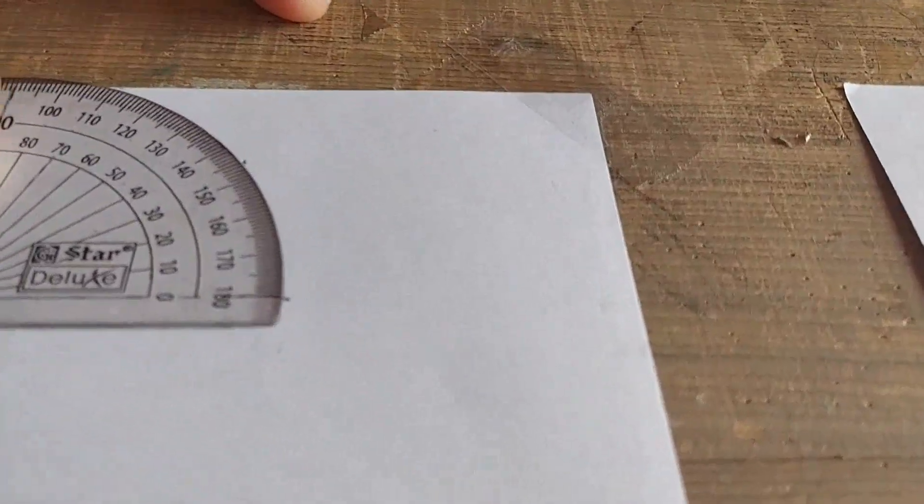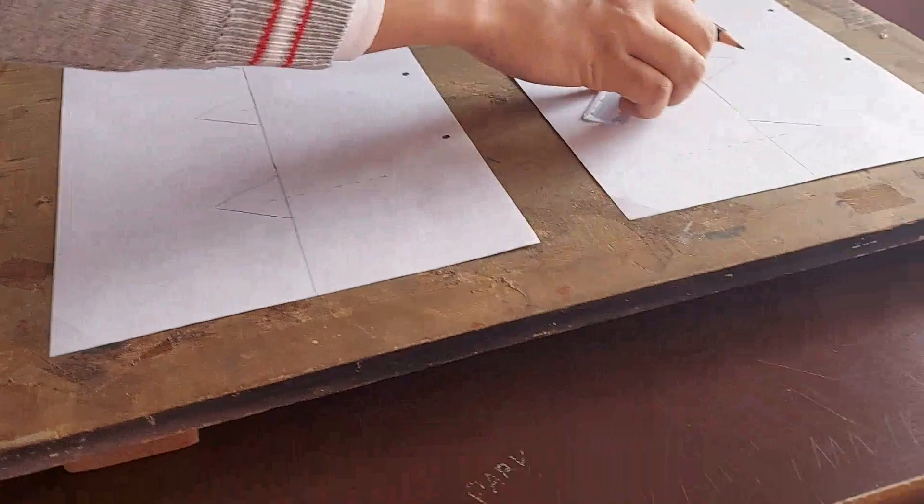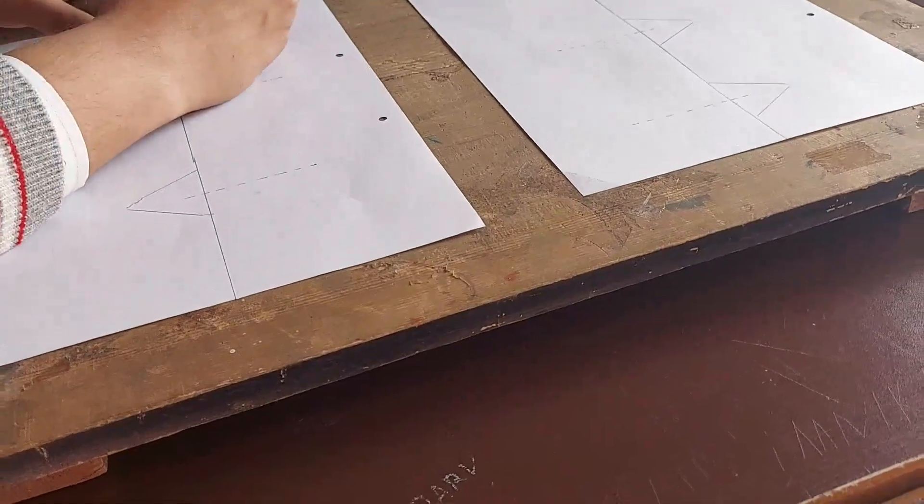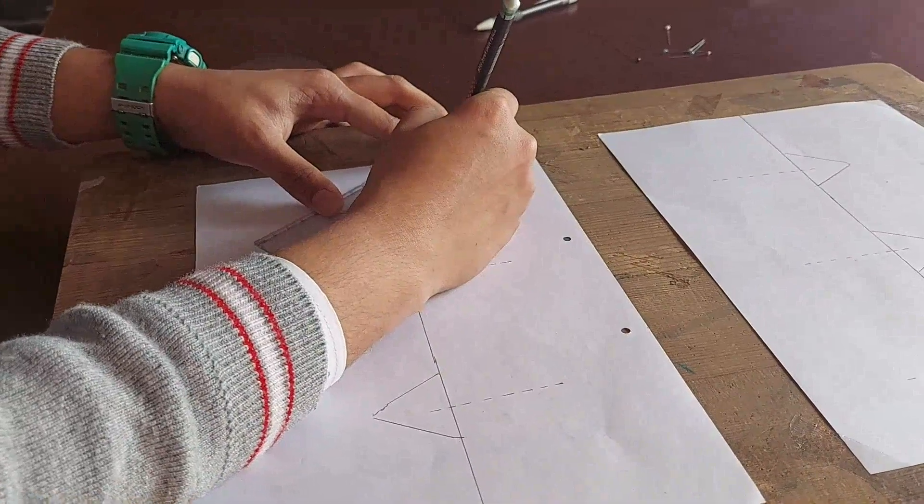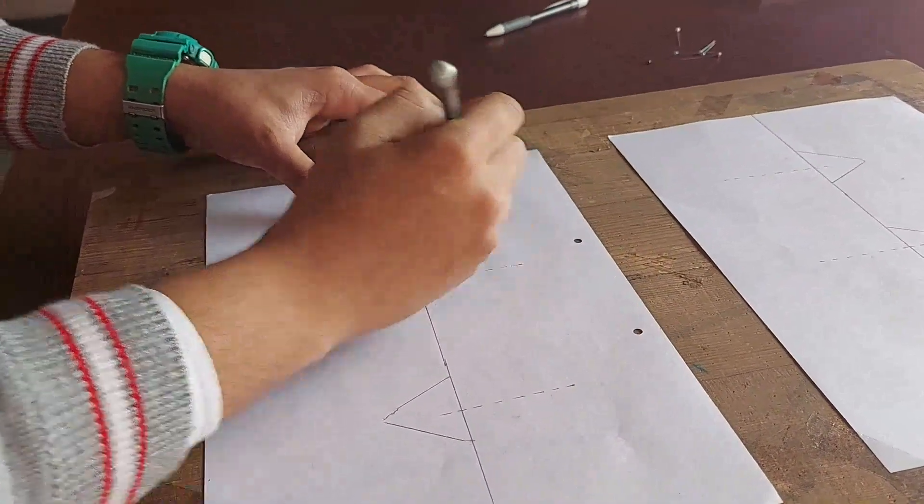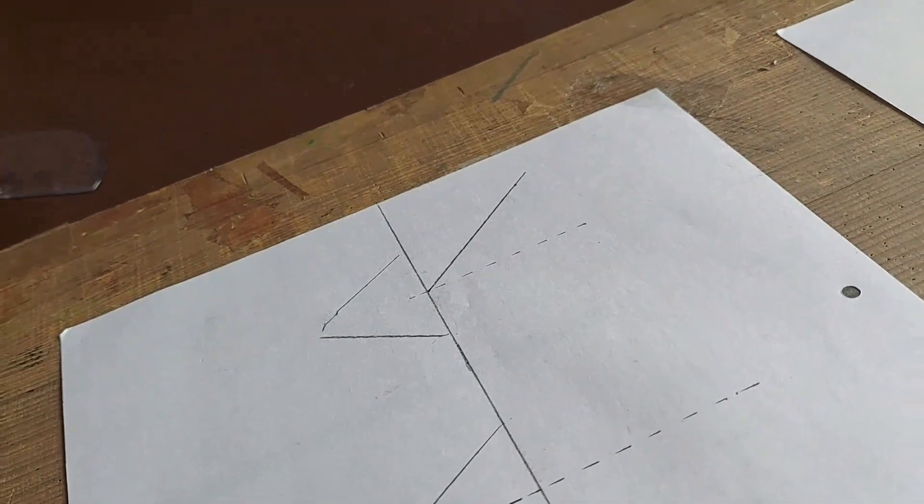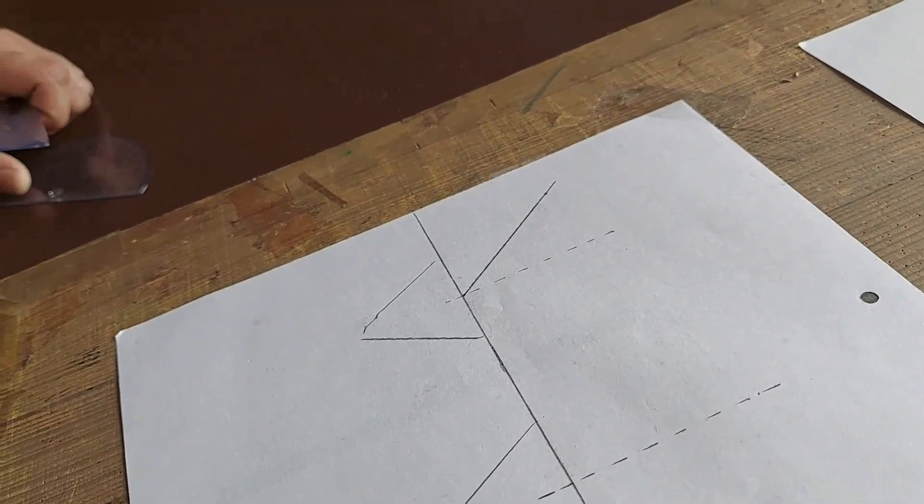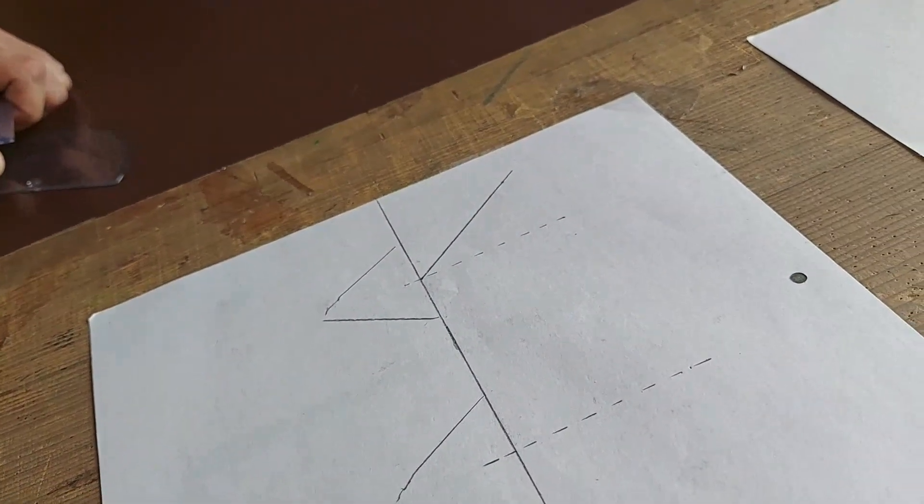This is 35 degrees. Now remove the protractor and draw the incident ray. One tip here: don't forget to put arrowheads on these lines, because when you put arrowheads, then they become light rays.